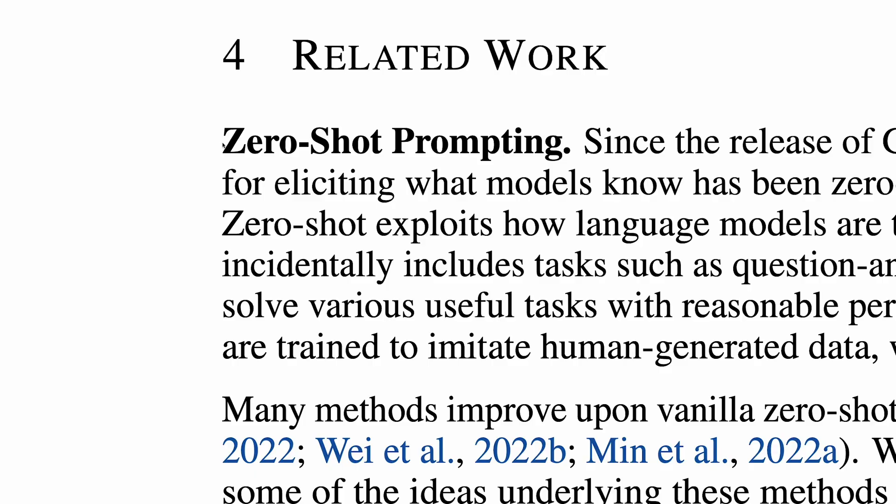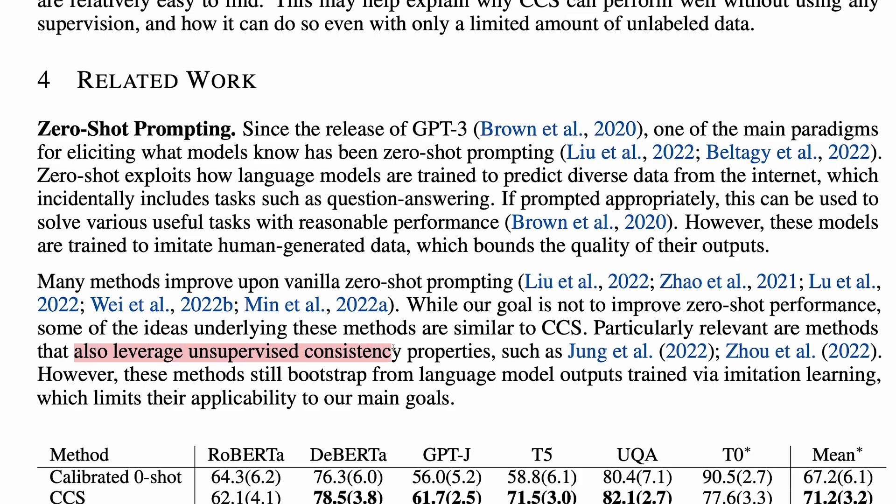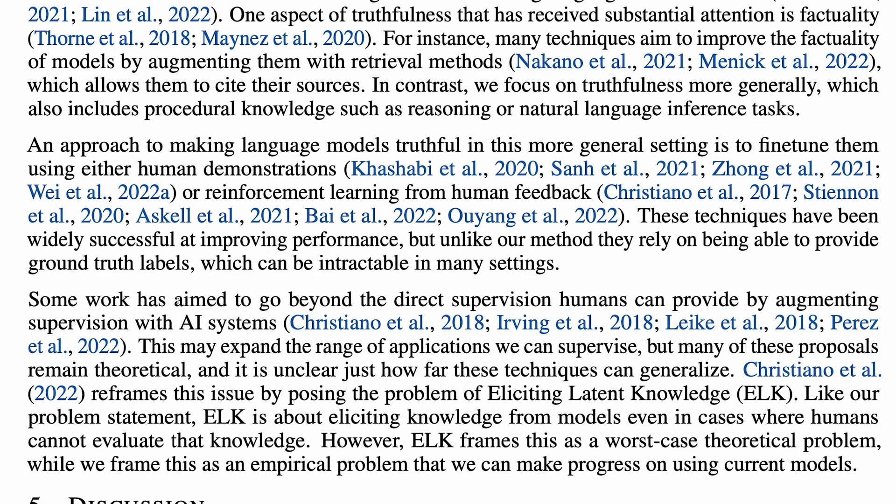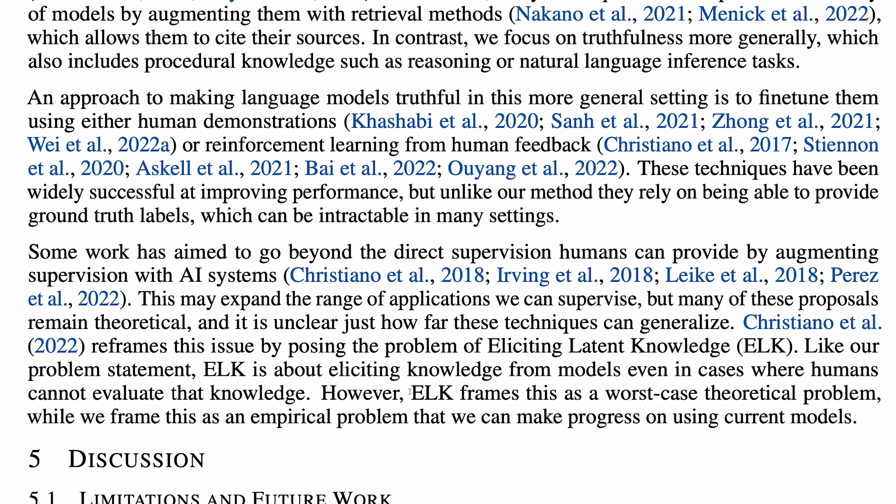In terms of related work, CCS relates to prior studies examining zero-shot prompting, particularly those that also leverage unsupervised consistency properties, albeit in a way that does not meet the criteria for discovering latent knowledge. There is also prior work on truthfulness, as well as work that has aimed to go beyond the direct supervision humans can provide by augmenting supervision with AI systems. But many of these proposals remain theoretical, perhaps most related. Eliciting latent knowledge is about eliciting knowledge for models even in cases where humans cannot evaluate that knowledge. Here, the authors note that eliciting latent knowledge frames this as a worst-case theoretical problem, while this work frames it as an empirical problem that we can make progress on using current models.